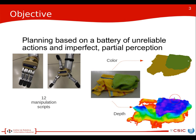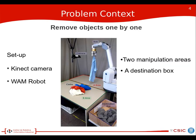The planning is based on a battery of unreliable actions and imperfect partial perceptions from 12 manipulation scripts and color and depth treatment of the image. The setup is a Kinect camera and a whole-arm manipulator robot, and the workspace has been separated by two manipulation areas and the destination box.